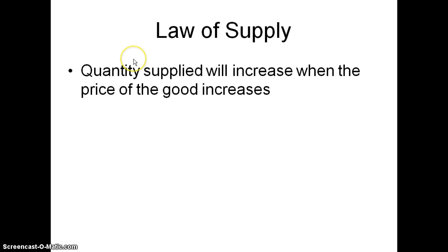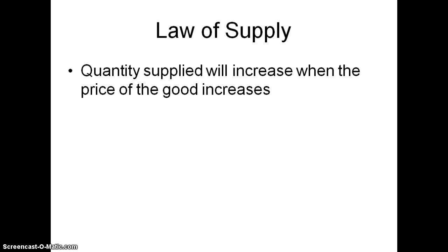The law of supply states that as a business owner, my supply — the quantity that I supply my good or service — will increase if I can get a higher price for that good. Basically, I want to sell more of the goods that I can sell at the store for a higher price, which will yield me a higher profit. Quantity supplied by the producer will increase if they can get a higher price for that good in the market.